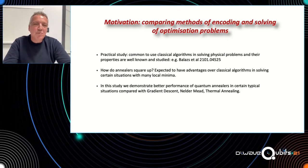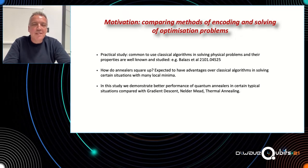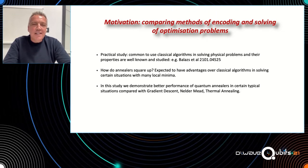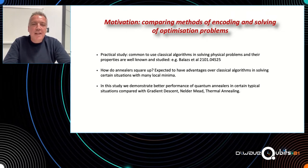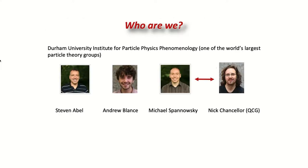The problems we're thinking about are ones where there are many local minima and we need to find the best one — the lowest one. In this study we compare typical heuristic classical algorithms with quantum annealing, and we do find that in many cases we can do much better. The three classical methods we compared are gradient descent, Nelder-Mead, and thermal annealing.